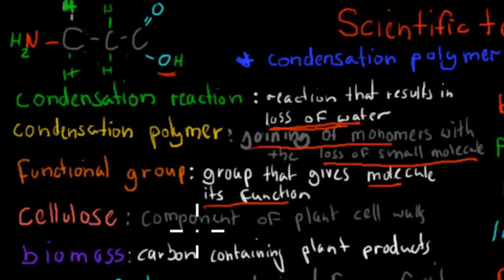We have cellulose, which is a component of plant cell walls, and cellulose is a polymer formed from beta-glucose monomers, and all plant cell walls have cellulose.